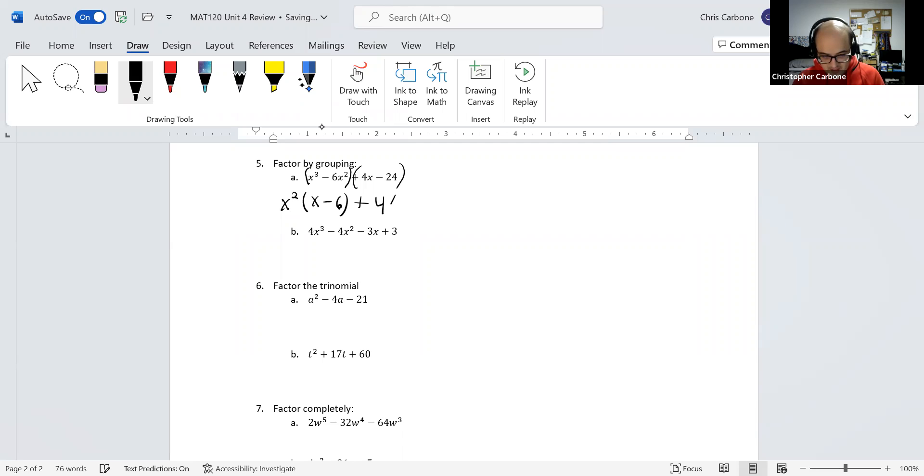So one factor is x minus 6, since they both share that, times x squared plus 4.